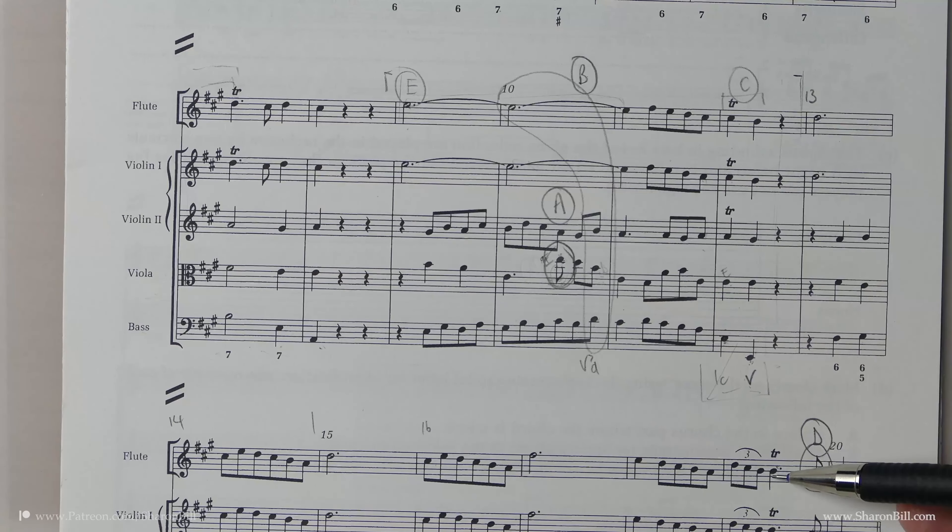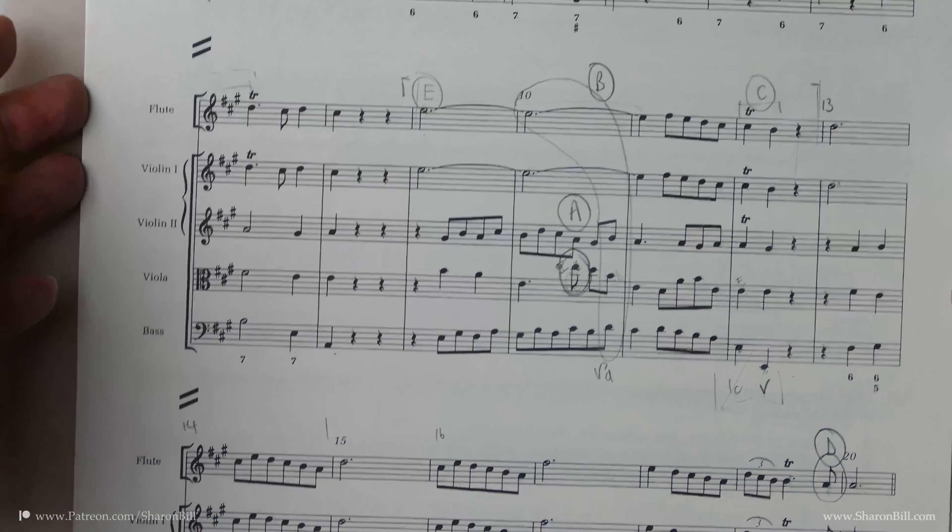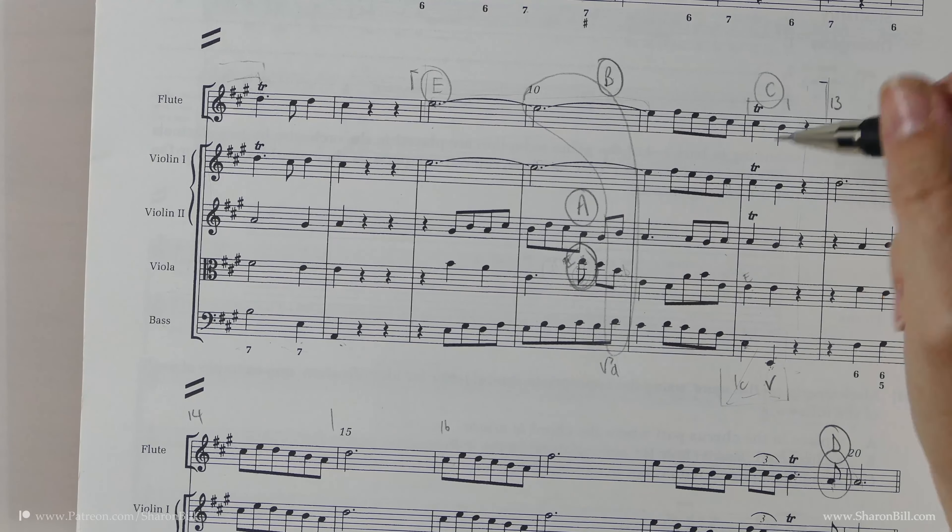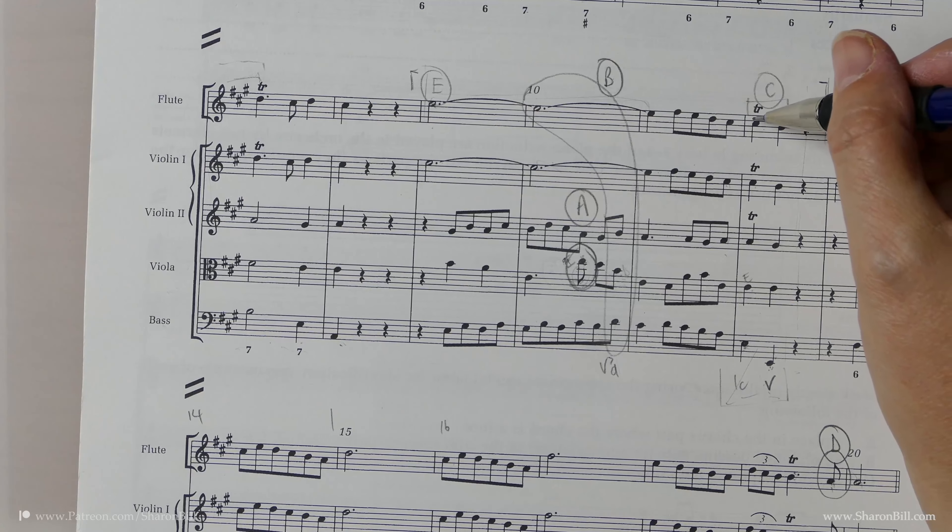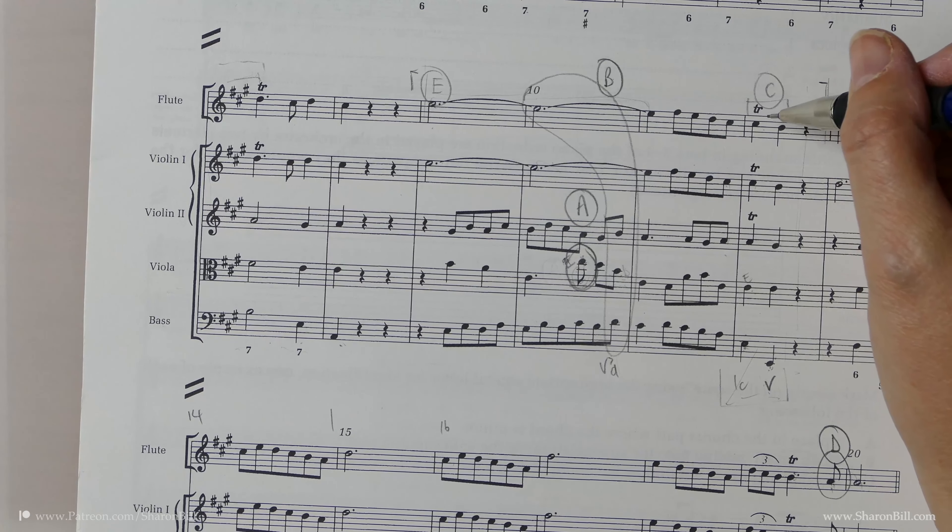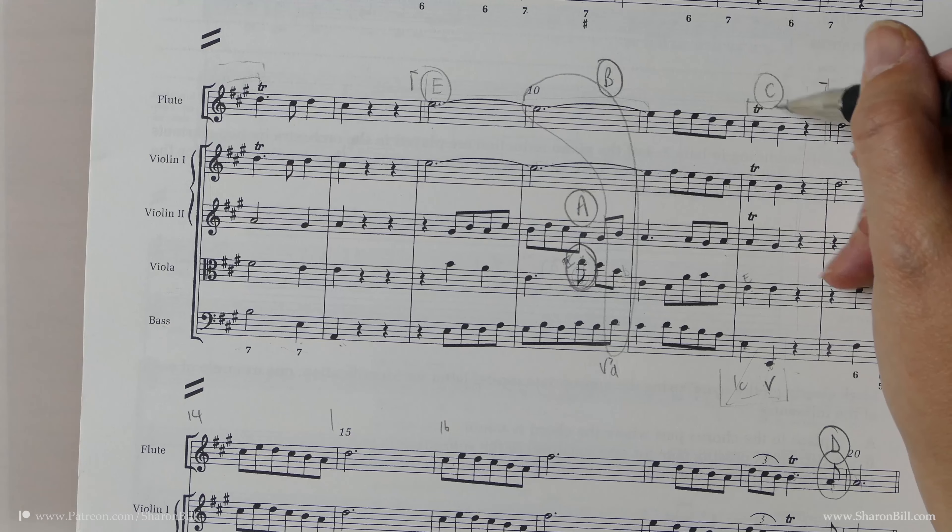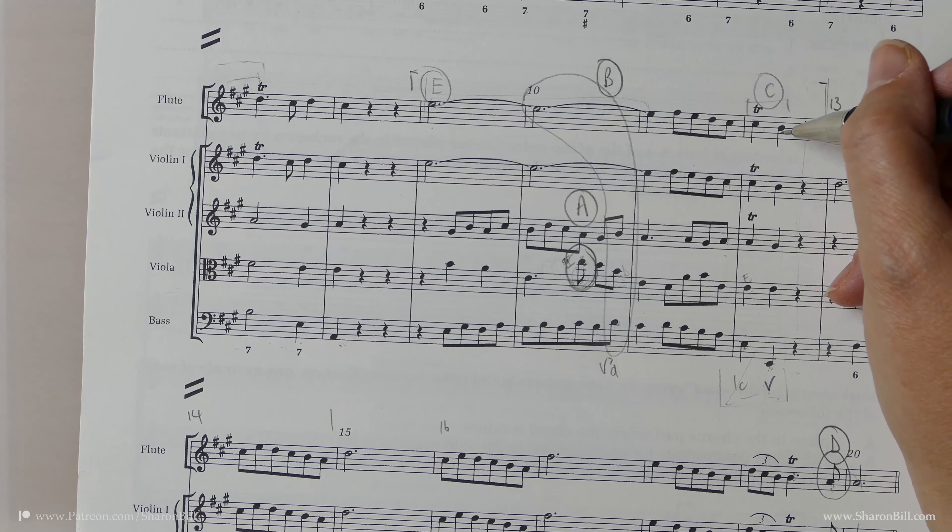So we're going to realize these trills. Generally speaking, in earlier music, a trill will begin on the upper note, on the note above the note written. And then oftentimes there would be a turn integrated into the end of that trill, just to sort of finish that trill off nicely.